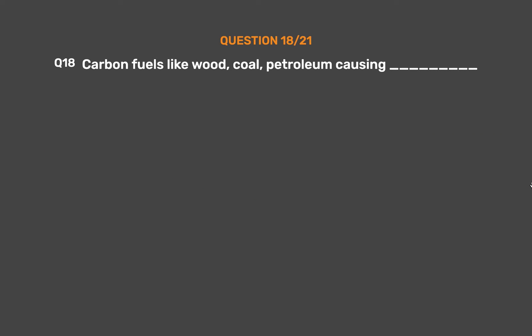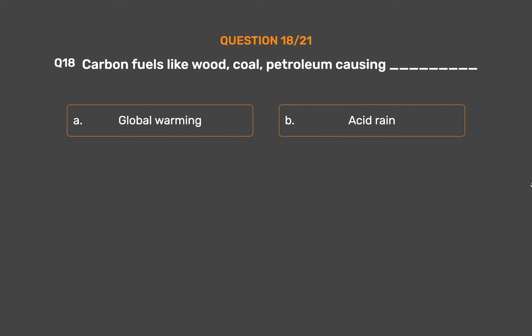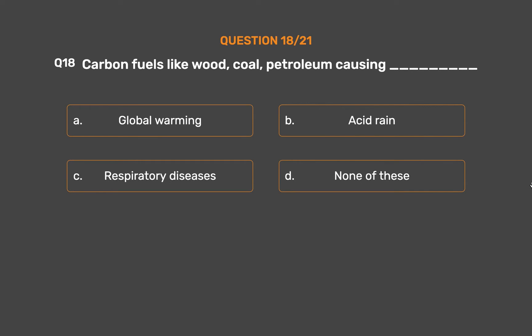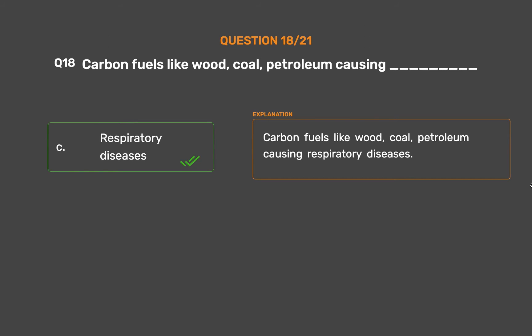Question number 18: Carbon fuels like wood, coal, and petroleum cause _____. Option A: Global warming. Option B: Acid rain. Option C: Respiratory diseases. Option D: None of these. The correct answer is Option C: Respiratory diseases. Carbon fuels like wood, coal, and petroleum cause respiratory diseases.